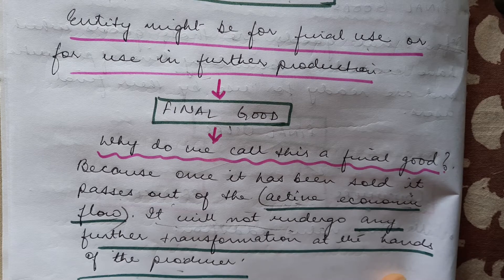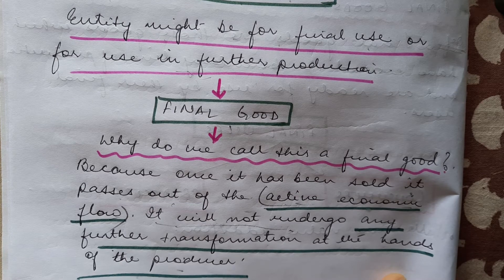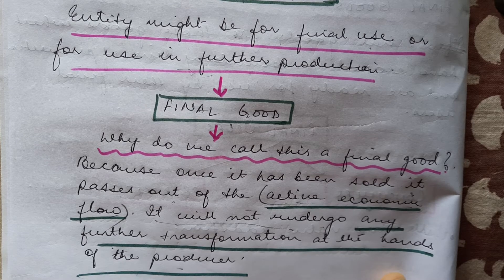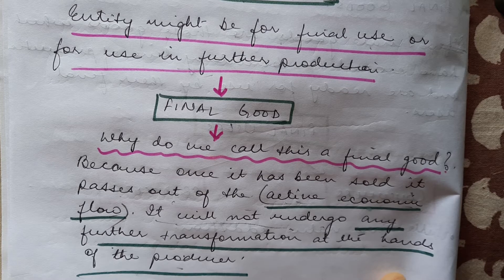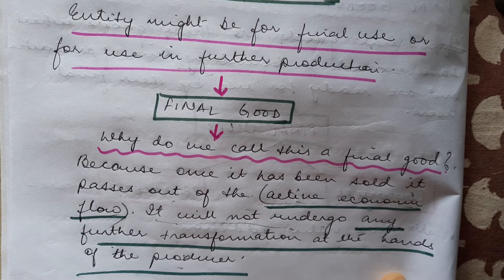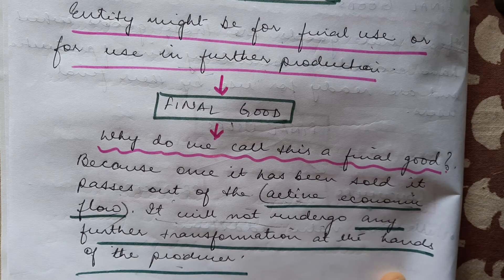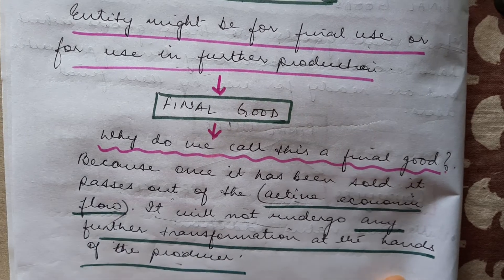To summarize: we call a good a final good when the production process stops, it does not undergo any further production, and it is ready to be used by the final user — whether that is a consumer or a producer. It is no more being put into the production process. This is the basic difference between a final good and an intermediate good.